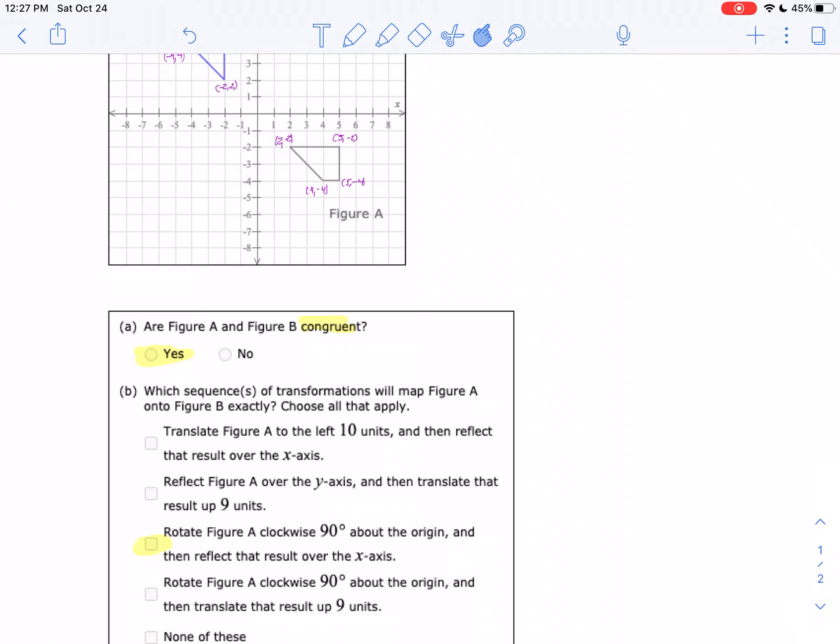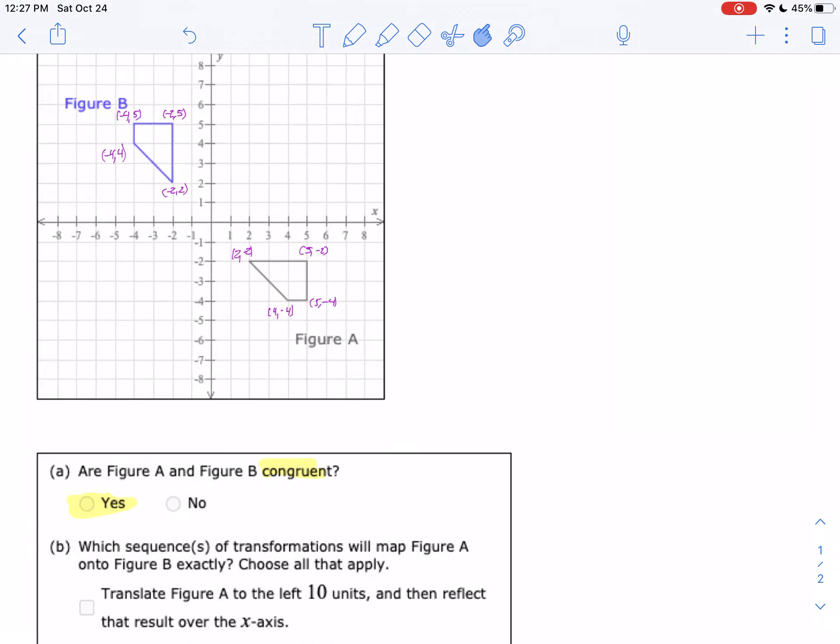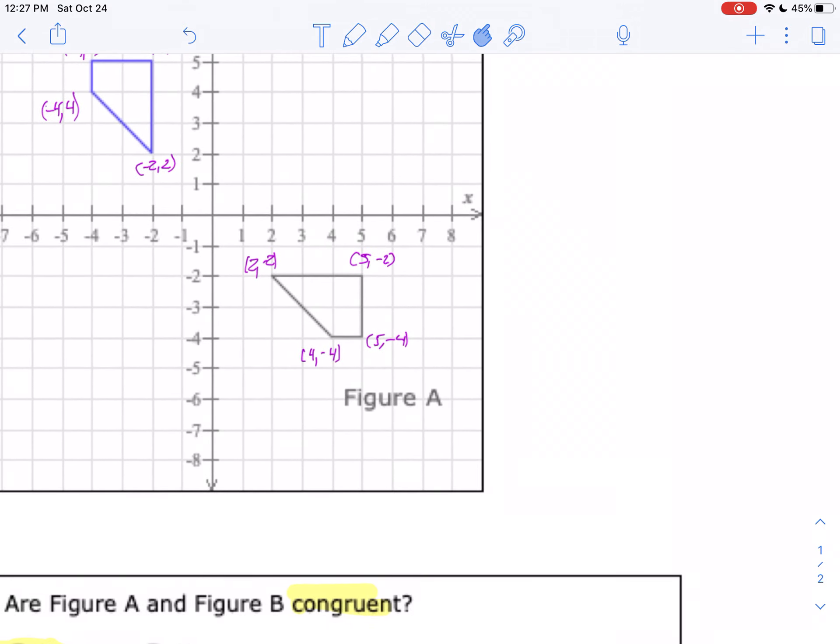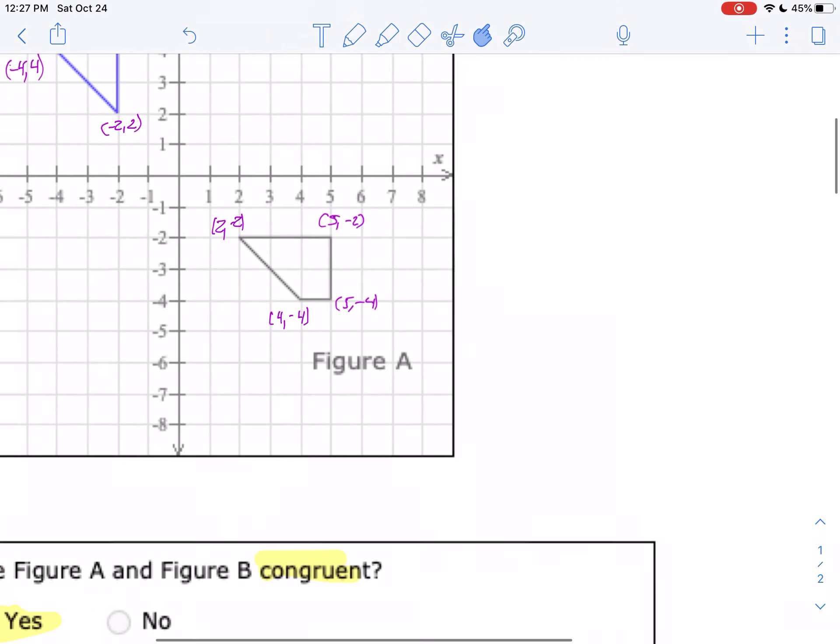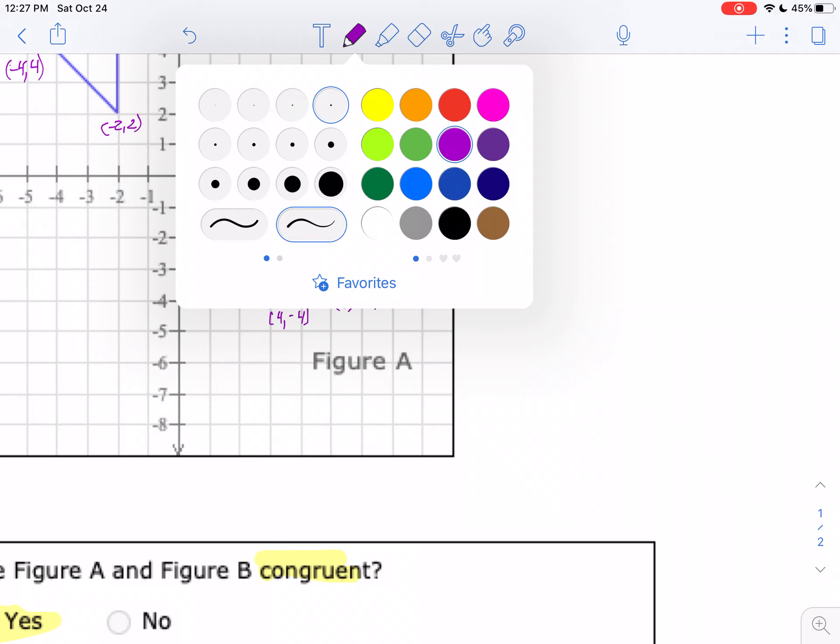Well, let's take a look at the actual coordinates. So if I take a look at the first coordinate, 2, negative 2. If I do a rotation of 90 degrees, 2, negative... Let me make that thinner. 2, negative 2.